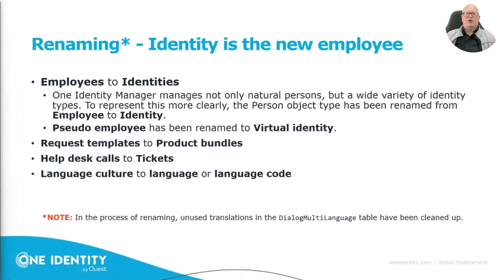There has long been a debate about terms in the Identity Manager and how to name objects, with the goal of making it as easy as possible to understand. One of the longest discussions is around the person object — objects stored in the table Person, representing humans or machine identities. They were named employees in the past, which was misleading because employees could also be subcontractors, machine identities, or something else. Because of that, since version 9.2 they are now named identities. Additionally, pseudo employees have been renamed to virtual identities, so identities now covers everything that is an identity.